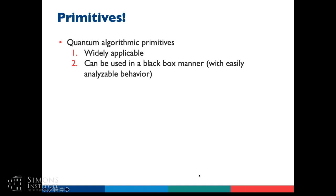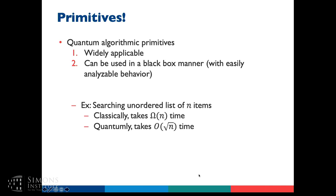The prototypical example of a quantum algorithmic primitive is Grover's search. It's widely applicable — there are many algorithms that involve searching — and it's very easy to characterize how it's going to behave. You just know that if you're searching a list of n things, that'll take classically about time n, but quantumly you get a square root speedup.